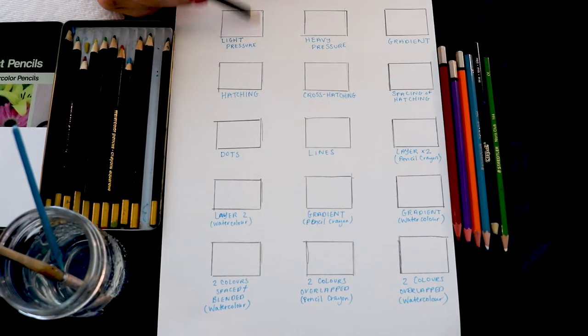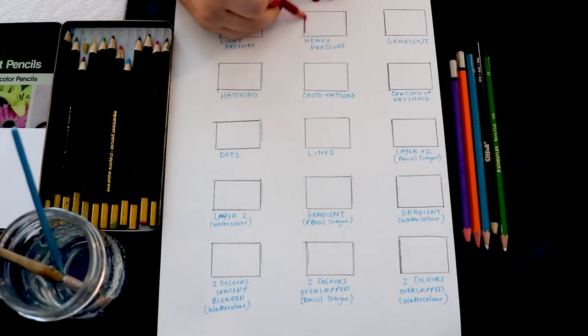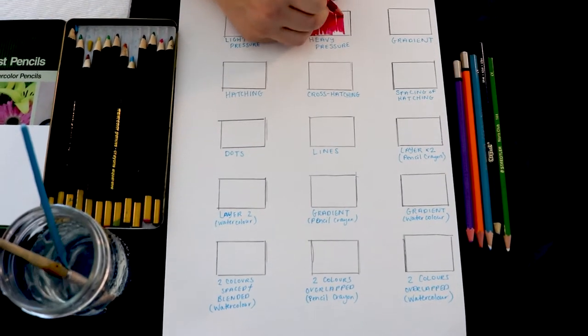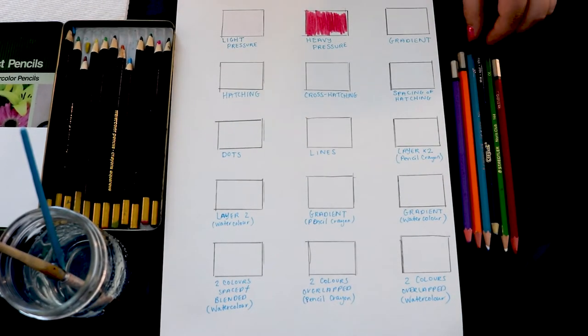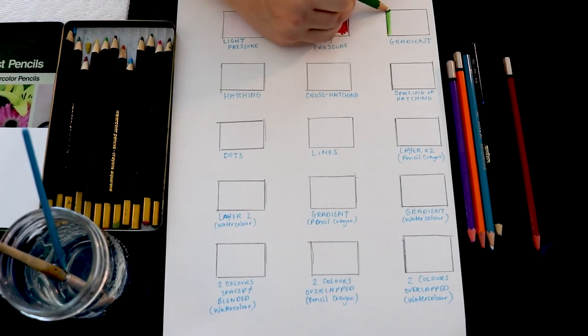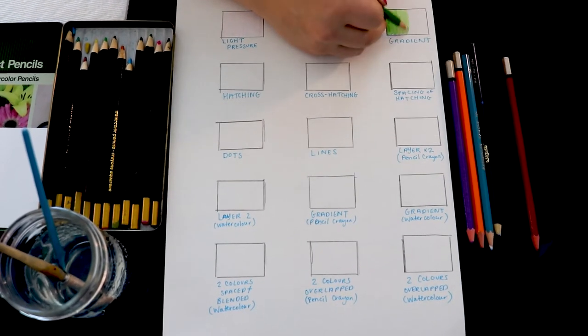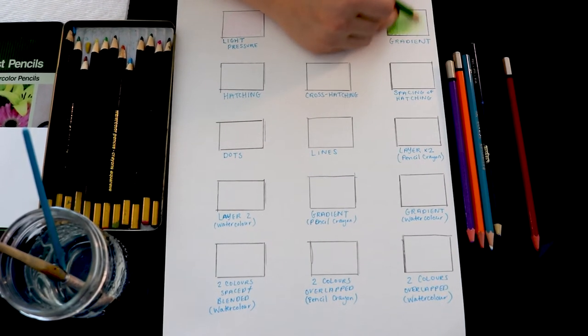One experiment that you can do is try coloring with different kinds of pressure. Press lightly or heavily and see what happens. You can also create a gradient by starting with light pressure and slowly applying more pressure as you move along. Remember to try these experiments with your pencil crayons and with your watercolor pencils.